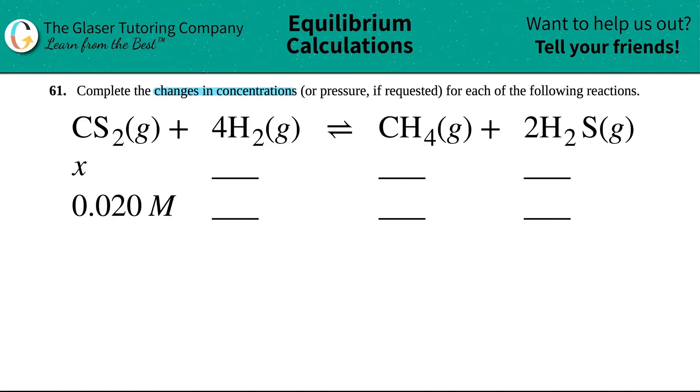Now in this case, they said that the CS2 gas was increasing by a factor of X. Now I say that it's increasing because it's a positive X value. They didn't say it's a negative. So we got to say that this is a positive X and positive means that it's increasing.